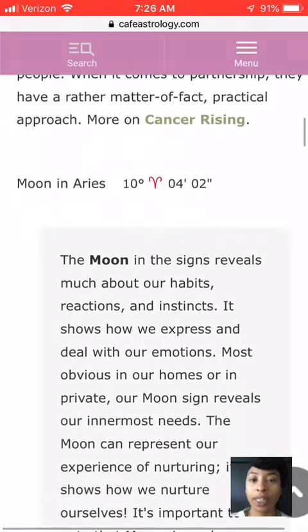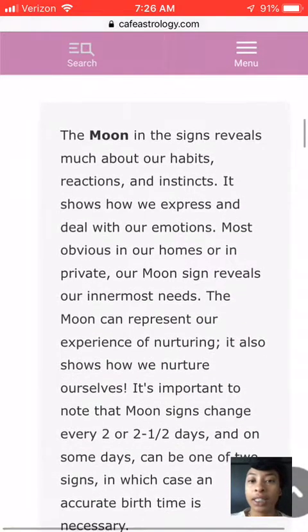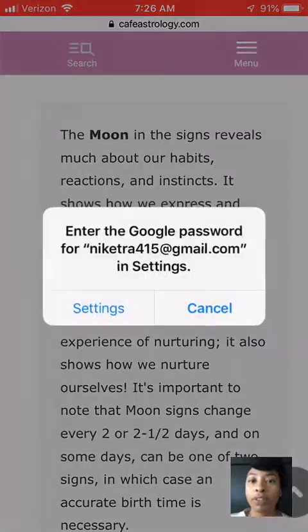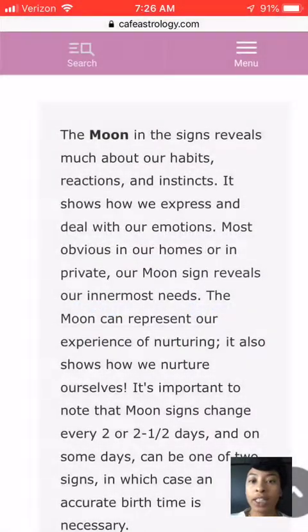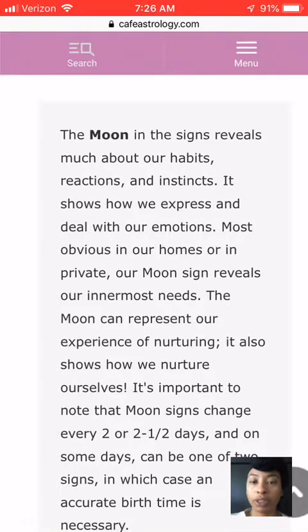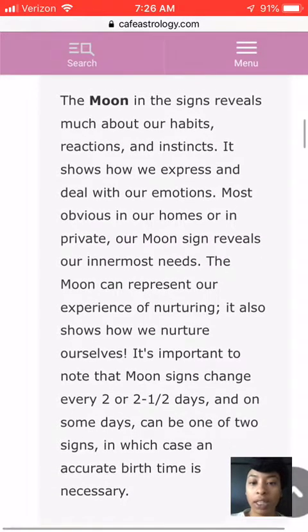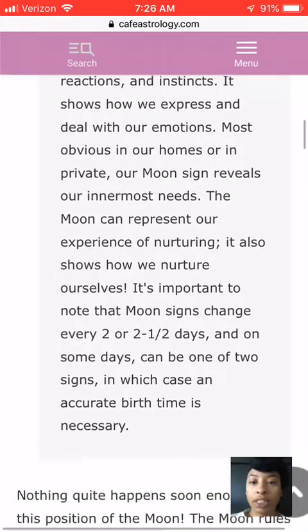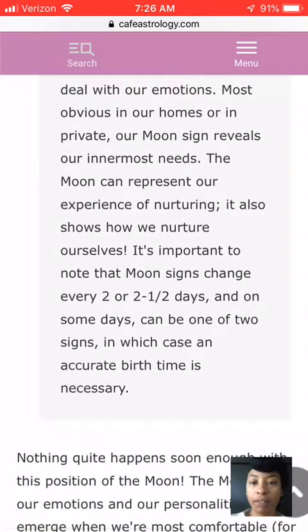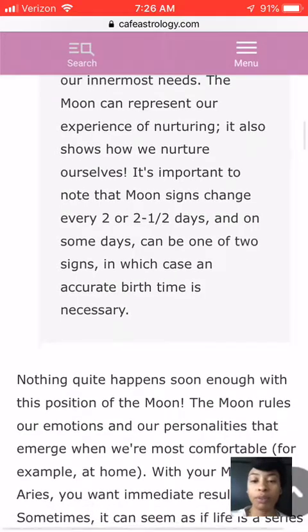Next we have the moon. The moon in the sign reveals much about our habits, reactions, and instincts. It shows how we express and deal with our emotions, so the moon is really tied to our emotions. It's important to note that the moon signs change every two or two and a half days, and on some days it can be one or two signs. In which case, an accurate birth time is necessary — that's why you need the specific time you were born to get more accurate results.